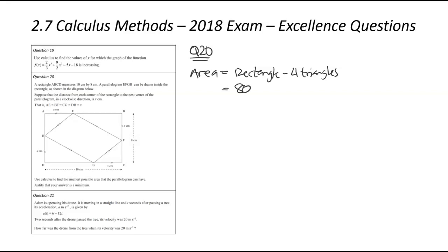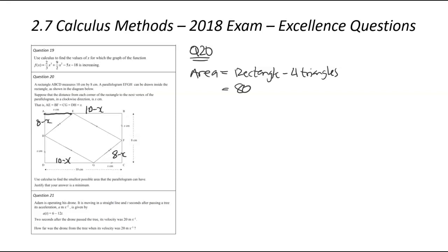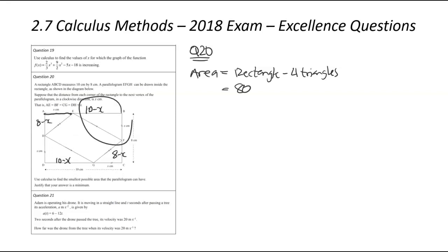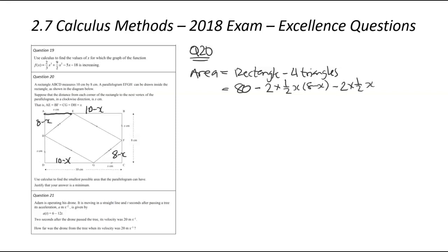I'm going to find the big area and then chop out the four corners, leaving us with the area of the parallelogram in the middle. The area of the rectangle is 8 times 10, which is 80. If this here is x, and the whole width is 10, this side is going to be 10 minus x — same on the other side. And similarly for the sides of length 8: this is x, which means this here is 8 minus x. So we've got two triangles that are x by 8 minus x, and two triangles which are x by 10 minus x. So we go minus two lots of one-half of x times (8 minus x), and minus two times one-half of x times (10 minus x).